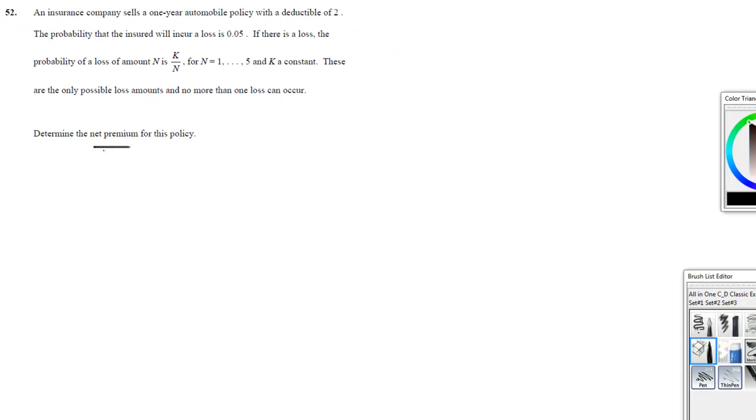Here the net premium is going to be the expected payout of the random variable that represents the payout of the insurance company. So that means that we have to know what the probability of the amount is going to be.